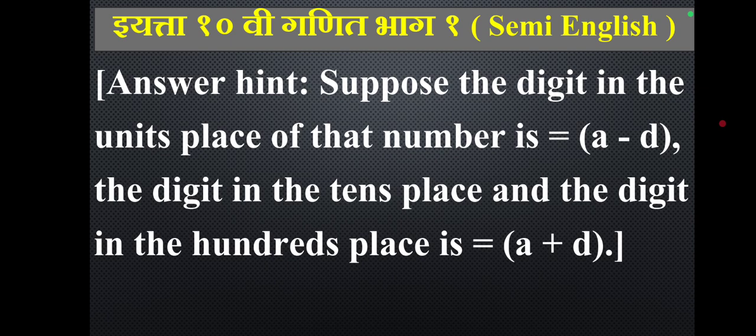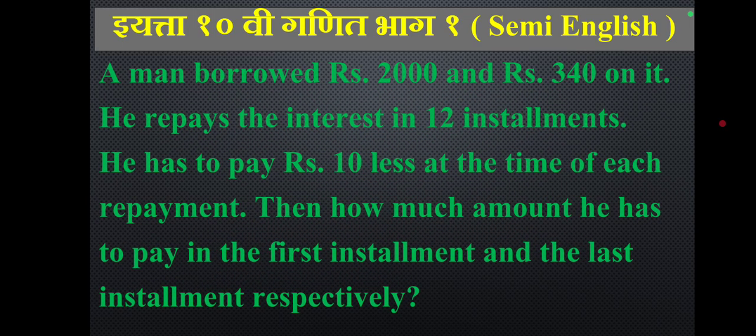A man borrowed rupees 2000 and the interest on it is rupees 340. He repays the interest in 12 instalments, paying rupees 10 less at the time of each repayment. Find how much he has to pay in the first instalment and the last instalment respectively.